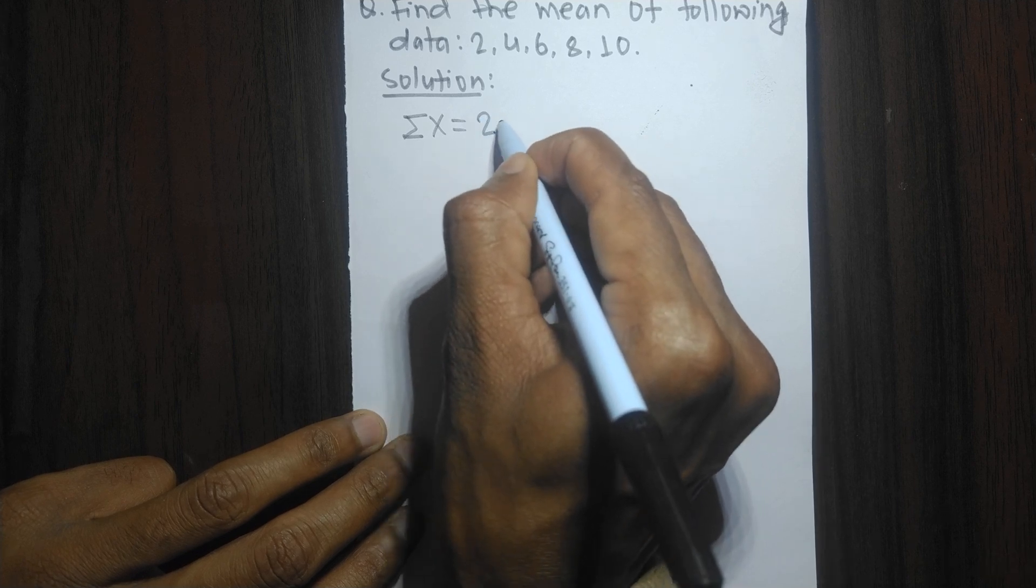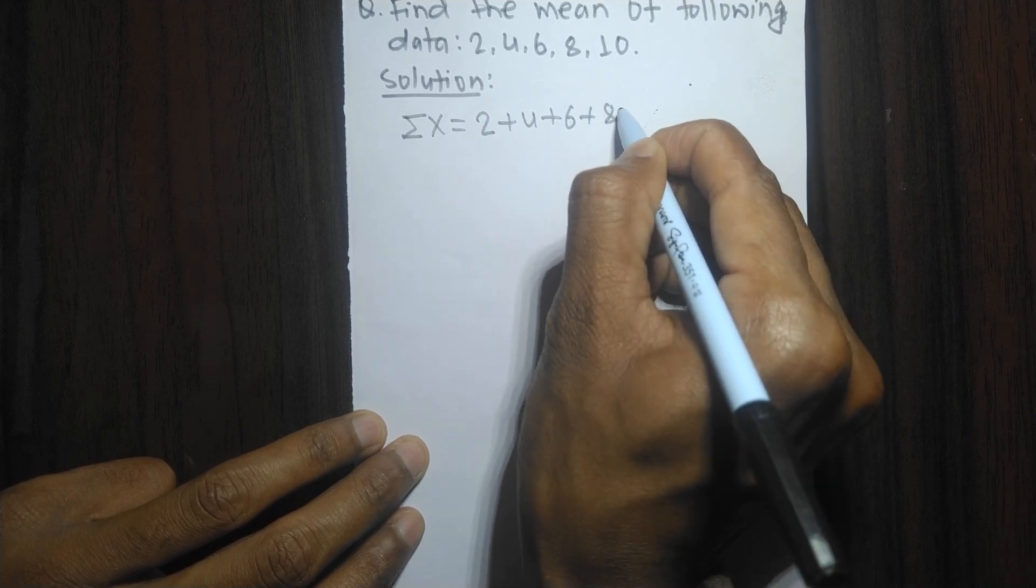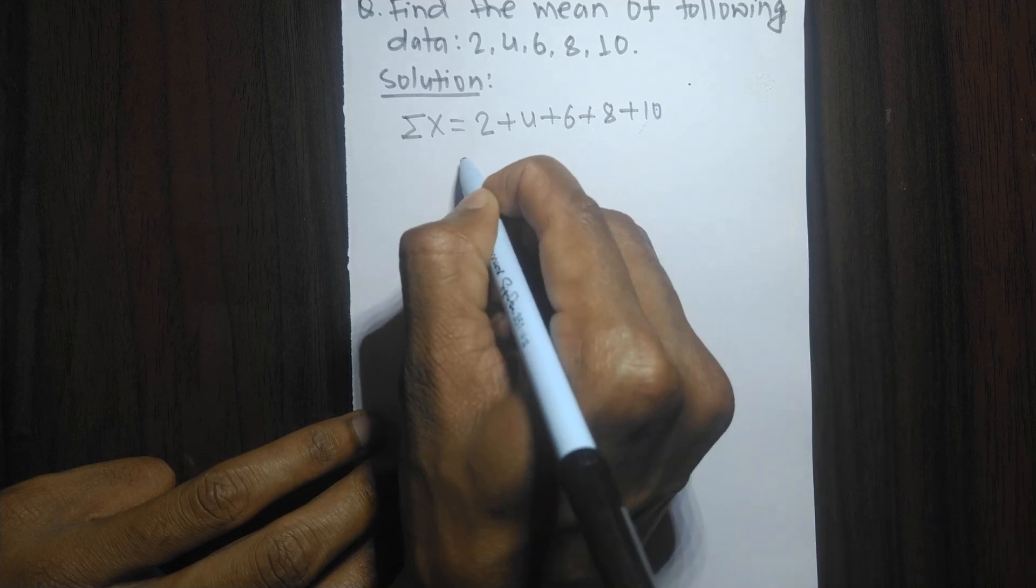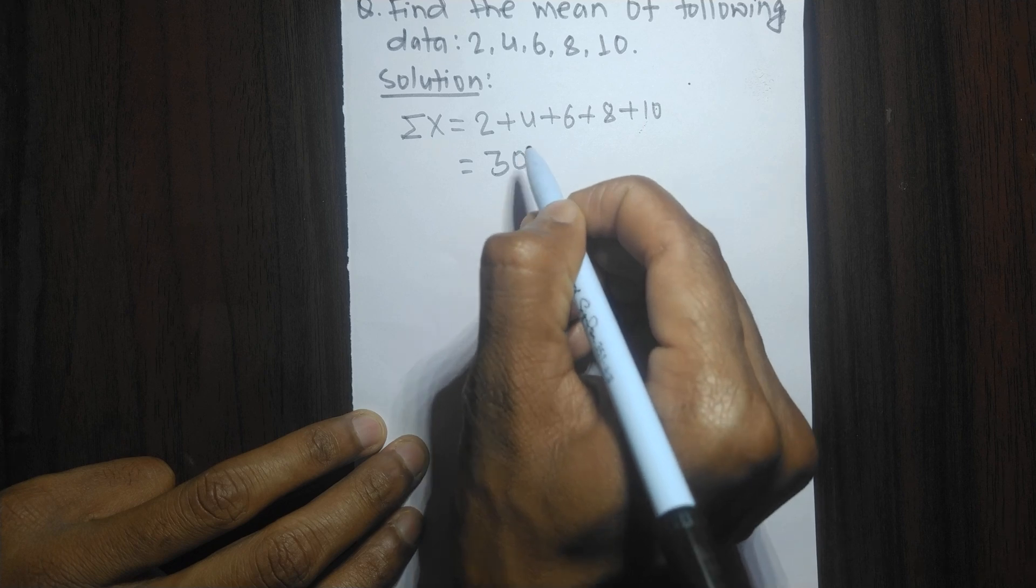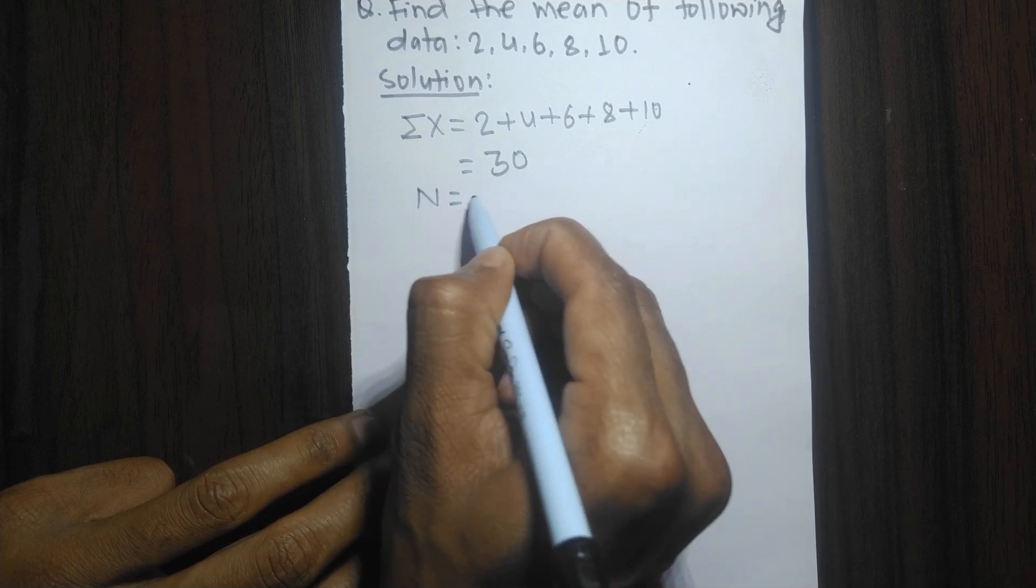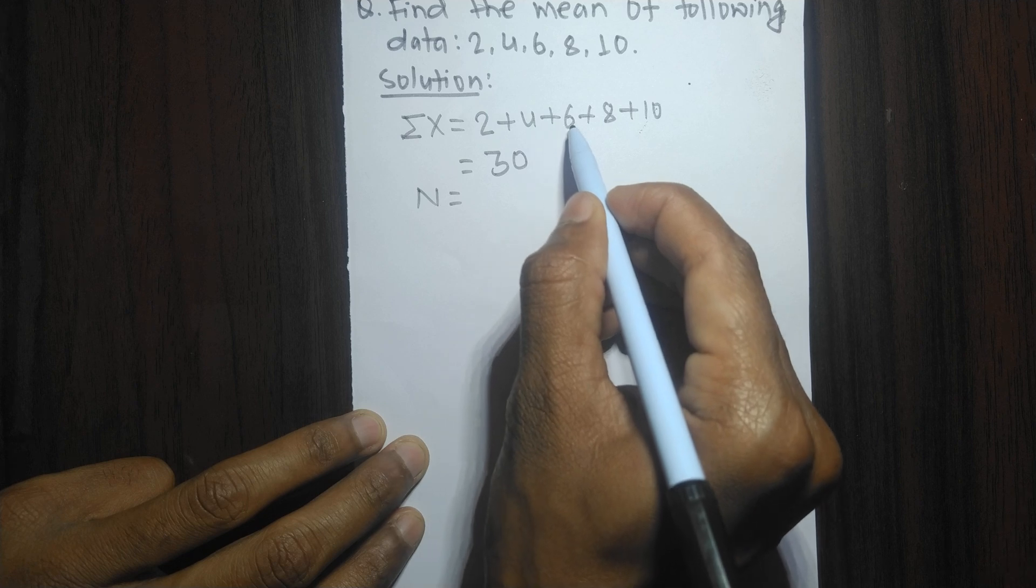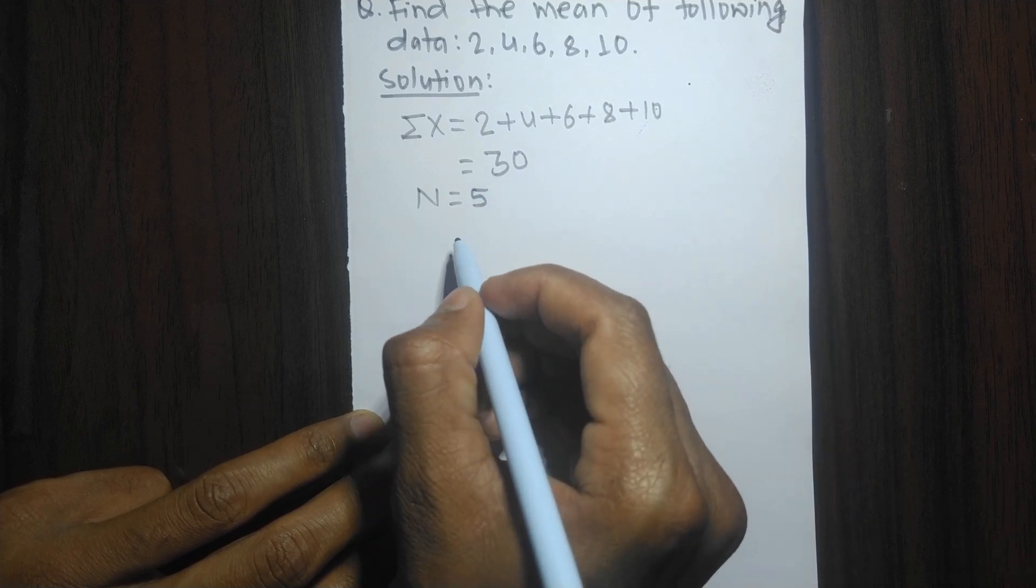The sum of all these items is 2 plus 4 plus 6 plus 8 plus 10, which equals 30. The total number N is equal to 1, 2, 3, 4, 5, so N is 5.